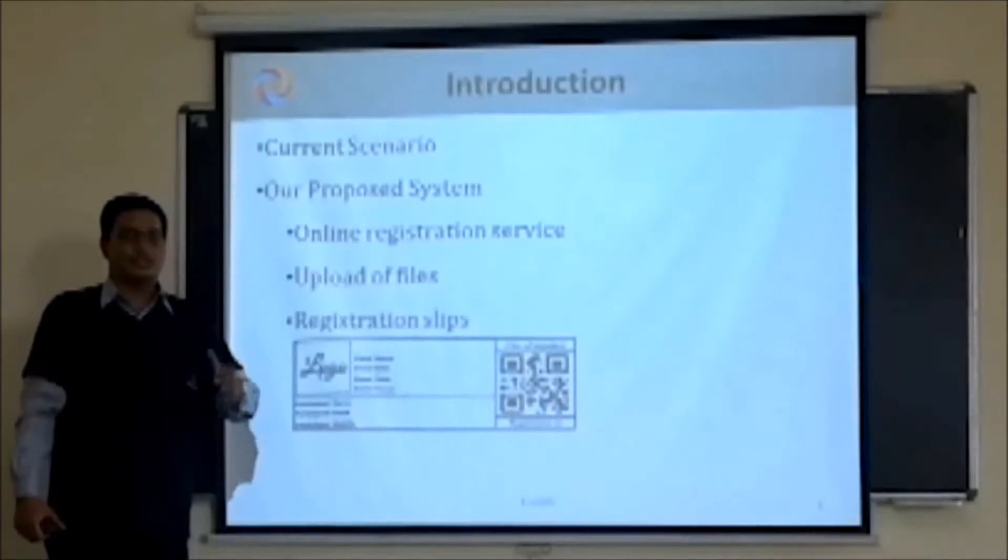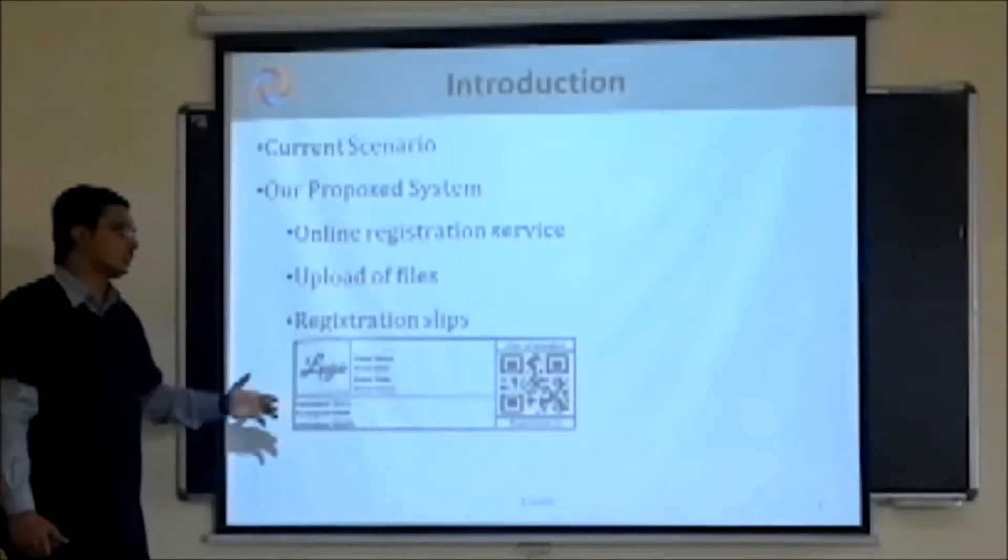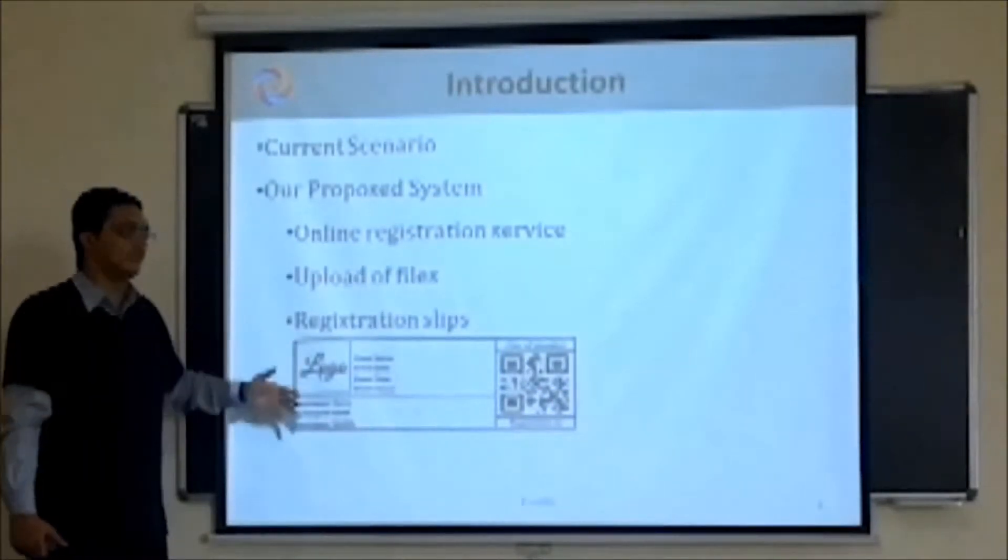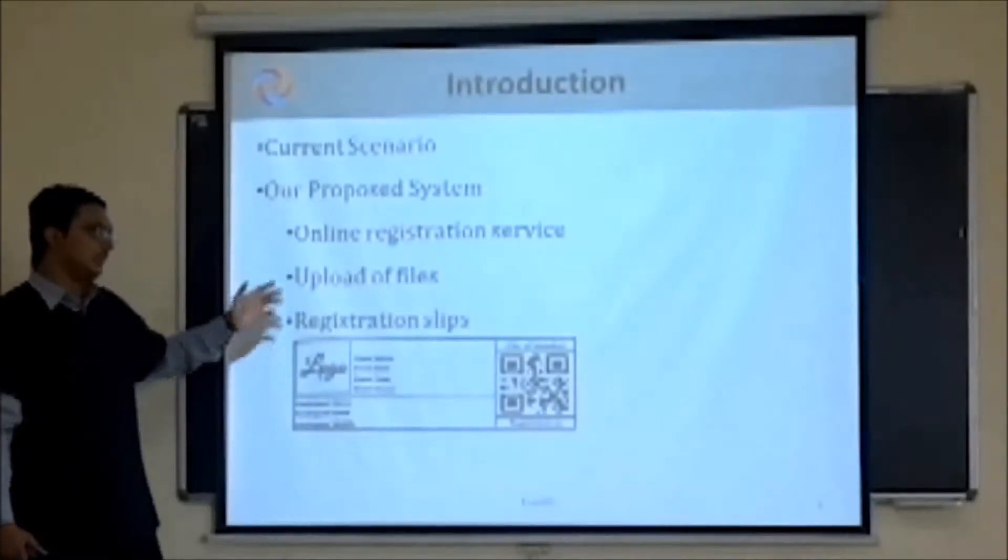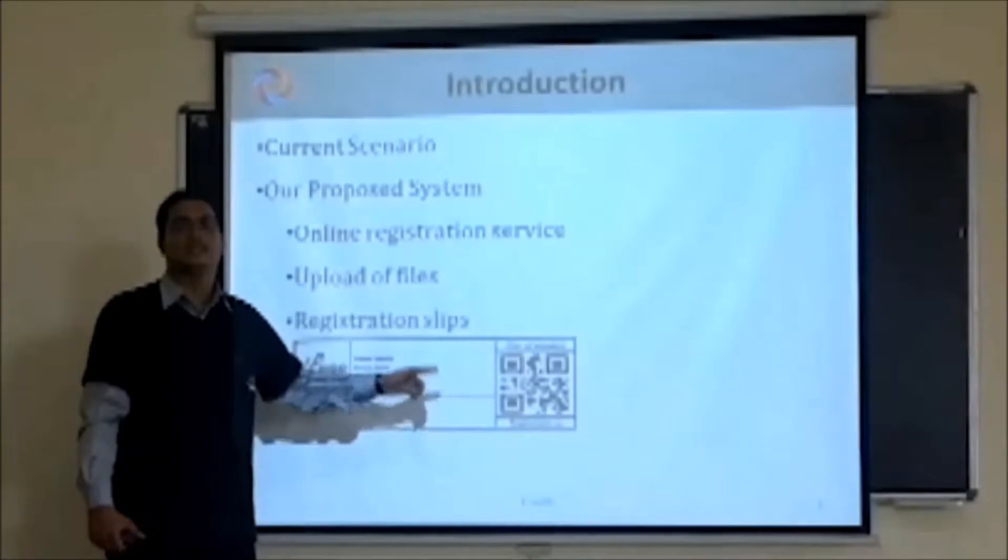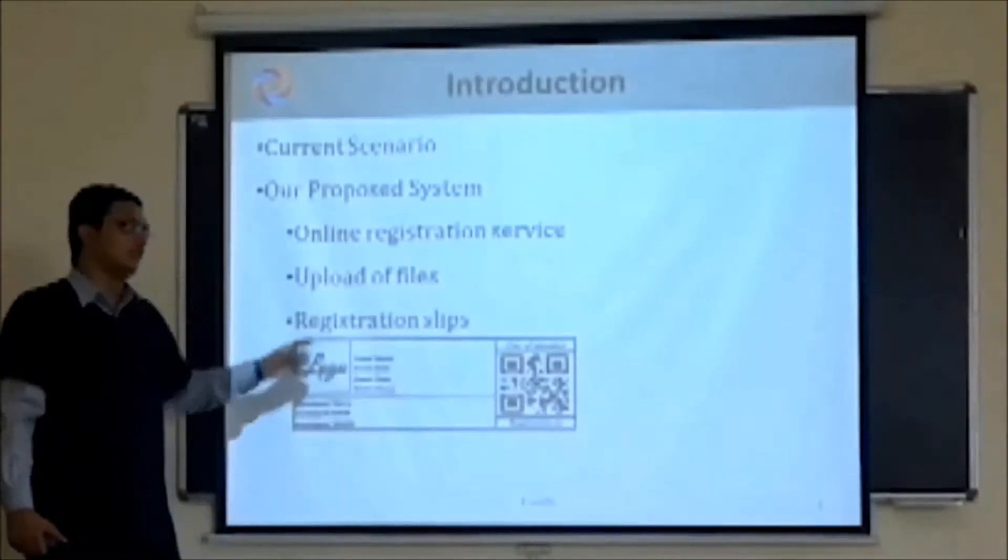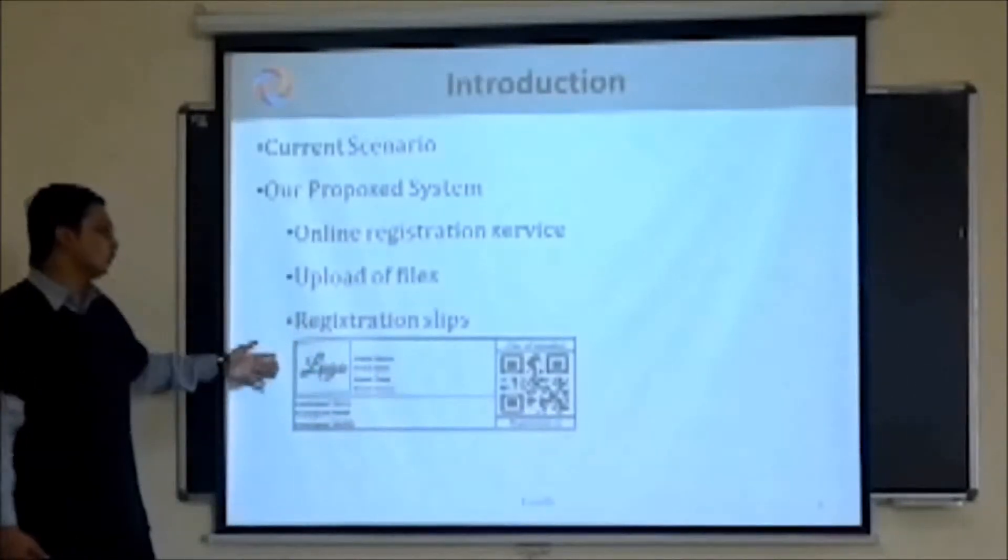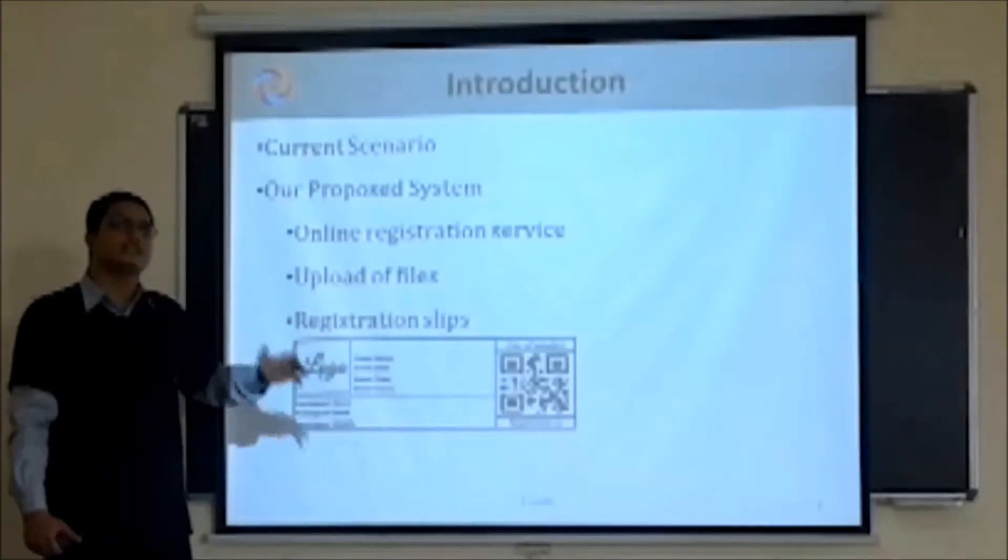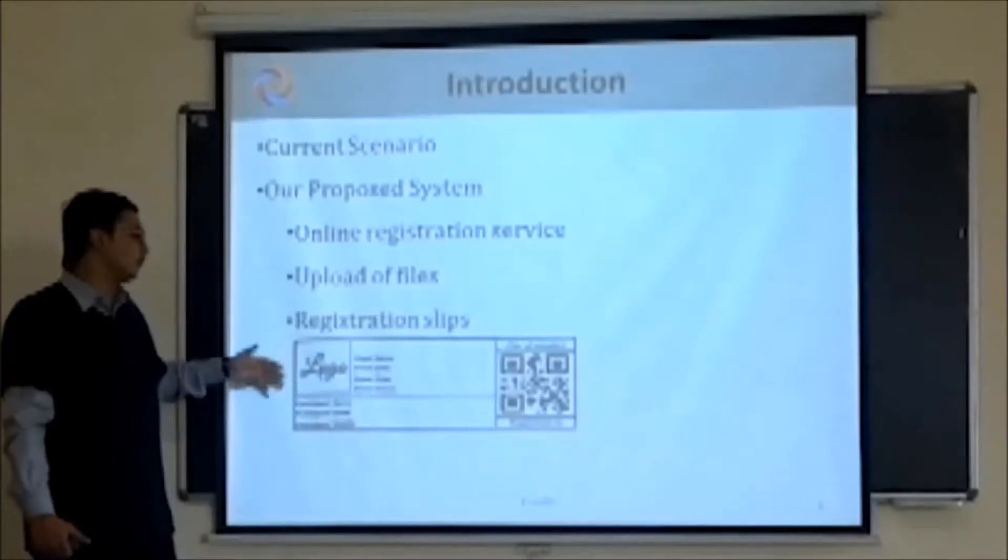Once successful checkout has been processed, a registration slip will be generated and displayed on the attendee's screen. It has a QR code which contains encoded information that can only be decoded with our mobile app. The host can customize the registration slip with their own logo.